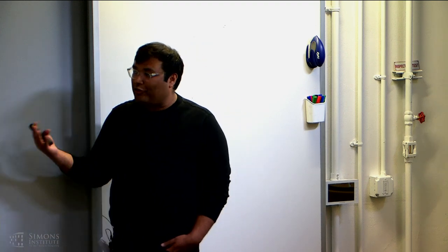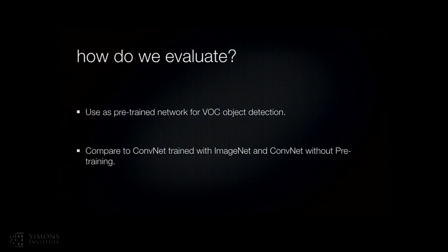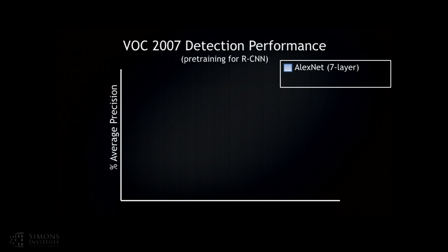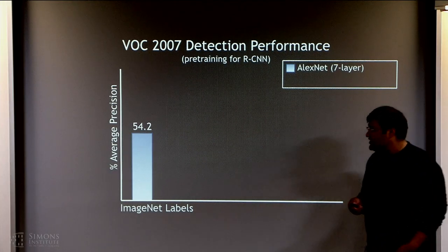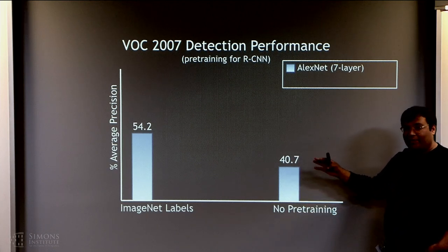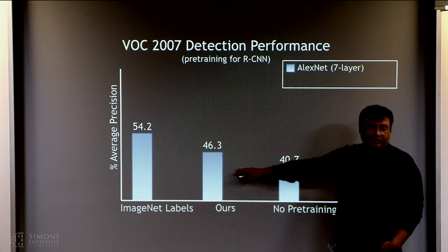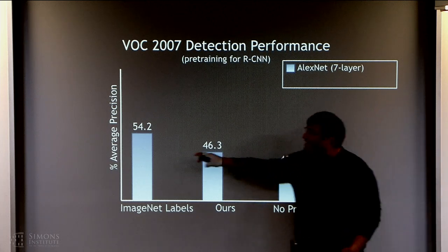For quantitative evaluation, we do exactly what Kristen did — we take this network trained to predict relative spatial layout and fine-tune it for object detection on VOC 2007, which has around 5,000 images. Comparing two networks: AlexNet pre-trained with ImageNet gets 54% mean average precision; random initialization gets 40.7%; and our approach gets 46.3%. So it is able to learn something meaningful, but not as meaningful as ImageNet at this point.